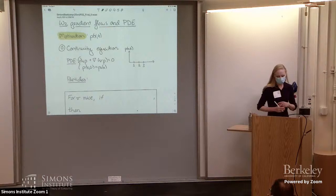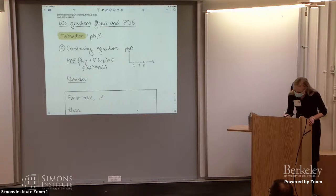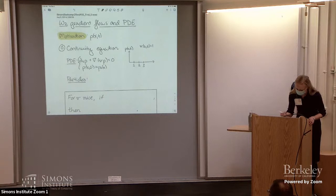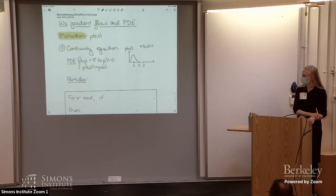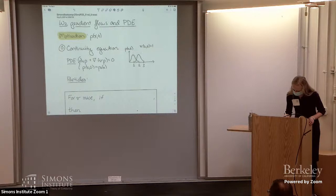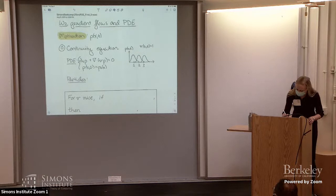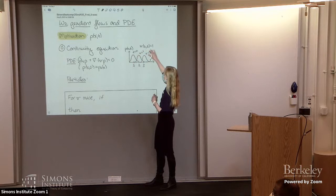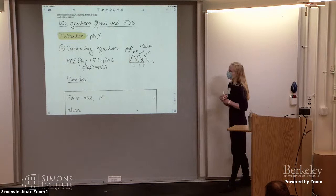Solutions of the continuity equation can look like many different things. The simplest example is a velocity field identically equal to one for all space and time—in that case, an initial density just shifts to the right over time. This overly simple example shows that the continuity equation matches your intuition: it describes how a density of particles moves over time according to the velocity field, which here just says shift to the right.